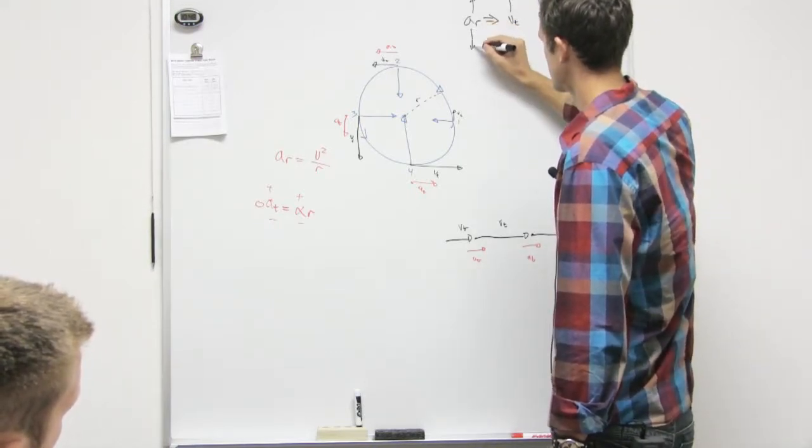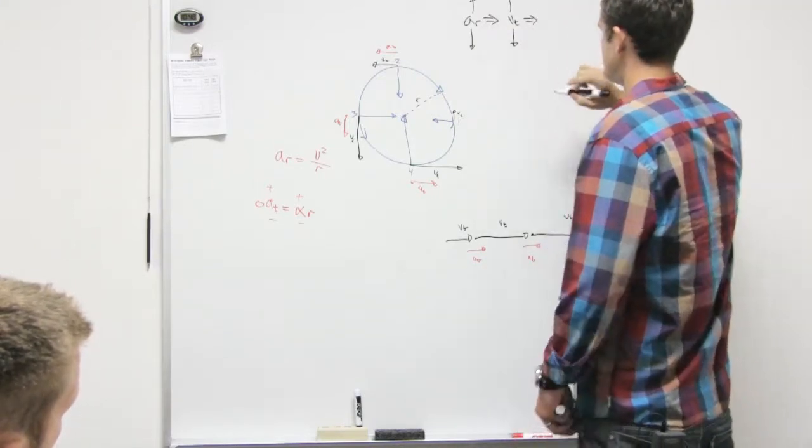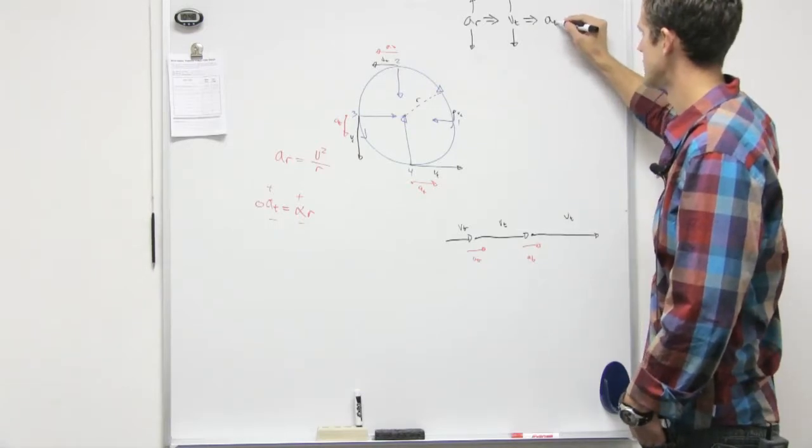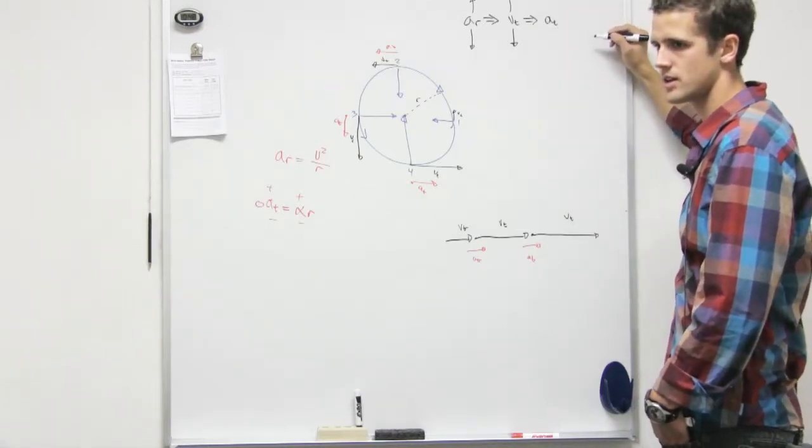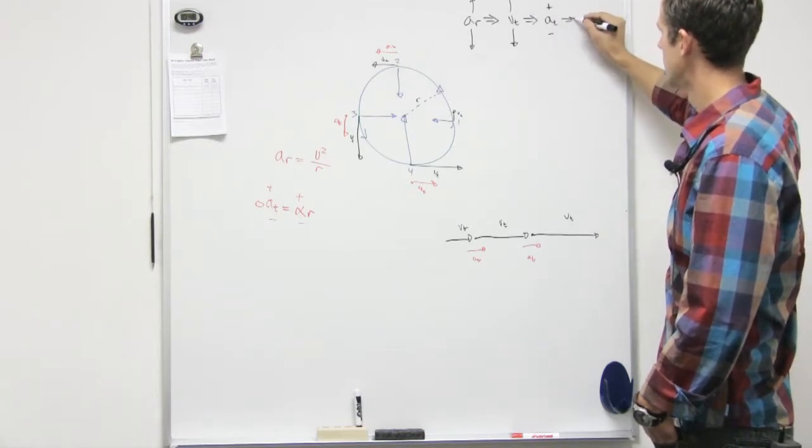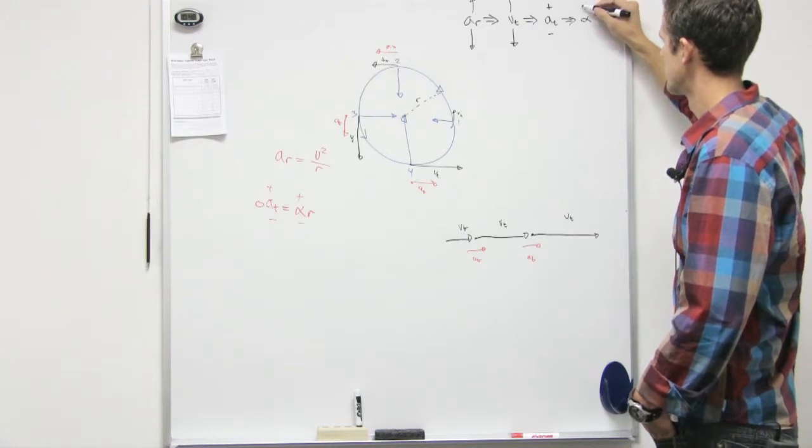If it's decreasing, velocity is decreasing. And if velocity is going up, what's the sign on our tangential acceleration? Positive. Right. And the sign on our angular? Positive.